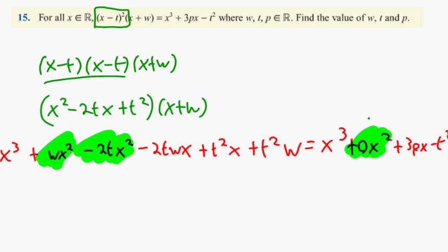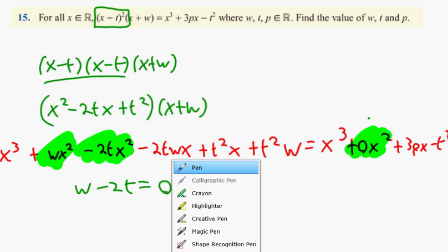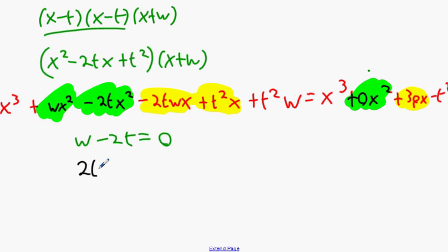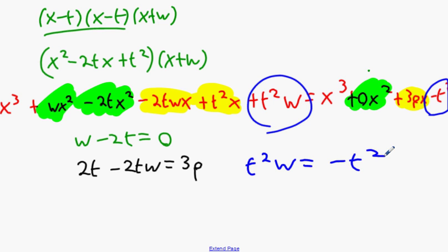So it's going to be w minus 2t equals zero. Then you go again to the next one. This one, this one, and that one there. So what's my equation for the second one? 2t minus 2tw equals 3p. And the last one is this blue part here and this one here. t squared w equals minus t squared. Everybody see the three equations we're dealing with?